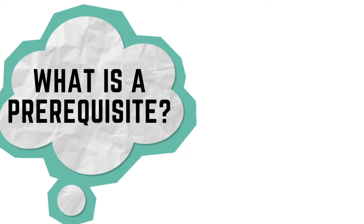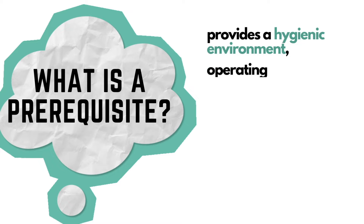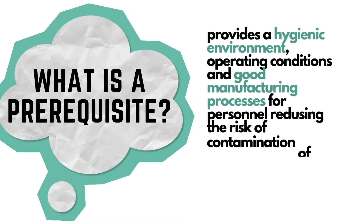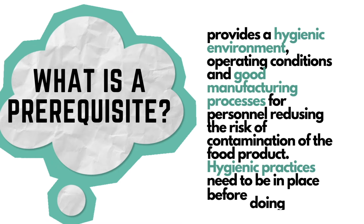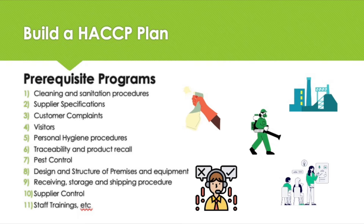What does this terminology mean? The prerequisite programs are programs that are put in place in the company to control hazards in the environment and prevent contamination of the product. These are the aspects you need for your factory to work. Prerequisite programs provide a hygienic environment, operating conditions and good manufacturing processes for personnel that reduce the risk of contamination of the food product. Hygienic practices need to be in place before doing HACCP.